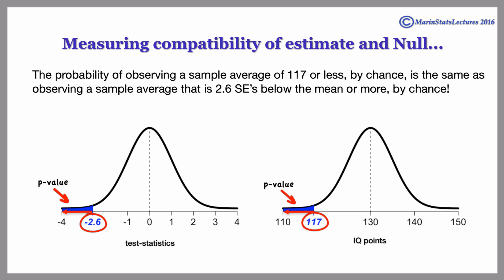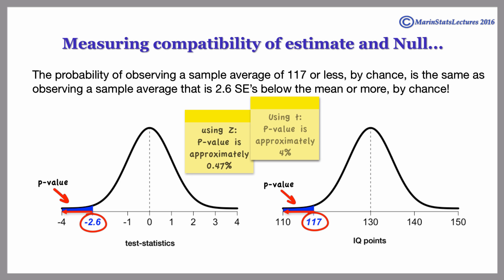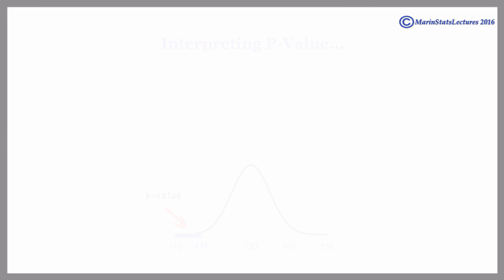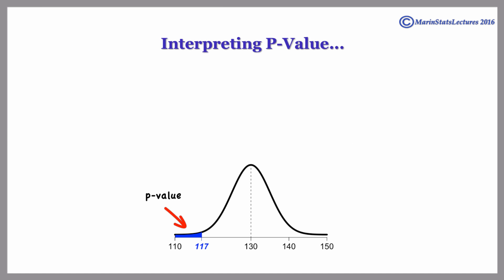Suppressing the calculations for the moment, and using the normal distribution as an approximation for simplicity, we would find that the p-value is approximately 0.47%.